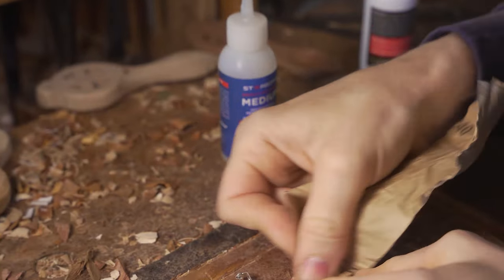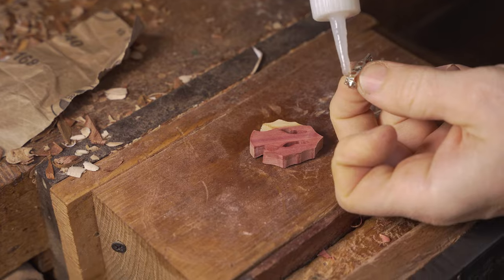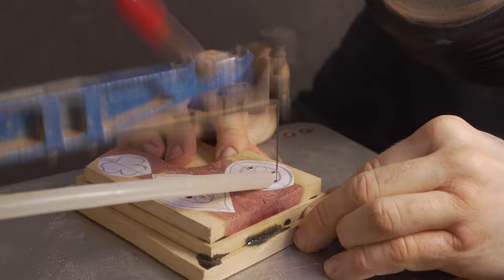Again, using that Starbond super glue, we stick the brooch clip to the back and proceed on to our next project.